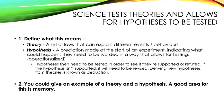Next, science tests theories and allows for hypotheses to be tested. A theory is a set of laws that can explain different events and behaviours. A hypothesis is a prediction made at the start of an experiment indicating what could happen. You may also want to explain that hypotheses need to be worded in a way that allows for testing — meaning they are operationalised — and you may want to include experimental and null hypotheses. Hypotheses then need to be tested to see if they're supported or refuted; if not supported, they must be revised. Deriving new hypotheses from theories is known as deduction.